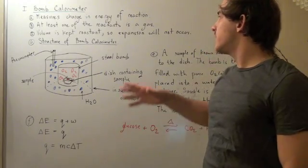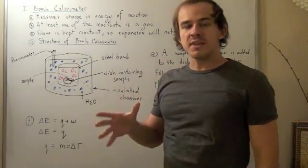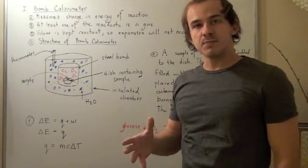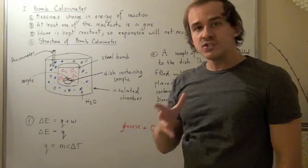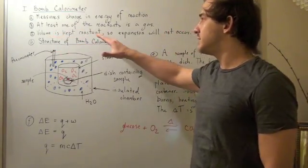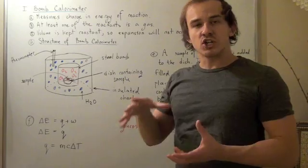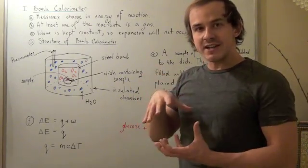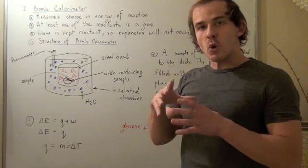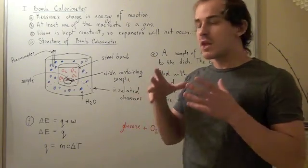And when we talk about gases, we need to remember that gases compress and expand. So what bomb calorimeters do is they intentionally keep the volume constant by letting the reaction occur in a steel container, in a steel cylinder. So no expansion in the steel cylinder occurs.